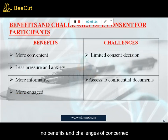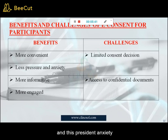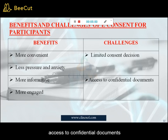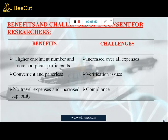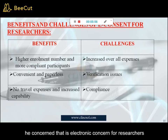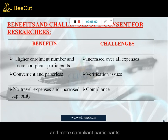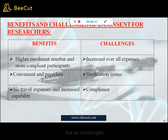Benefits and challenges of e-consent for participants. Benefits: more convenient, less pressure and anxiety, more information, more engaged. Challenges: limited consent decision, access to confidential documents. Benefits and challenges of electronic consent for researchers. Benefits: higher enrollment numbers and more compliant participants, convenient and paperless, no travel expenses, and increased capability. Challenges: increased overall expenses, verification issues, and compliance.